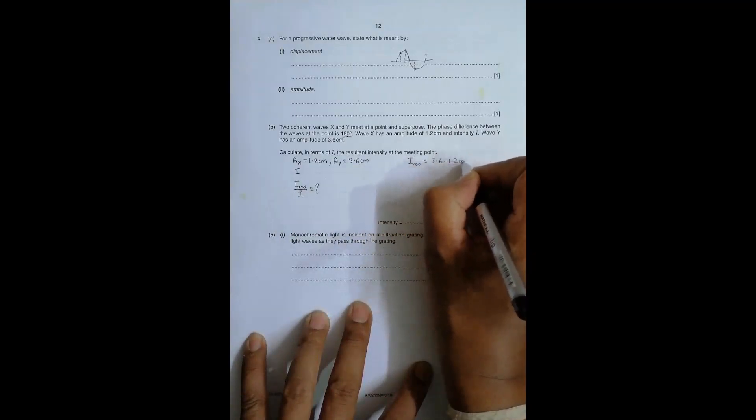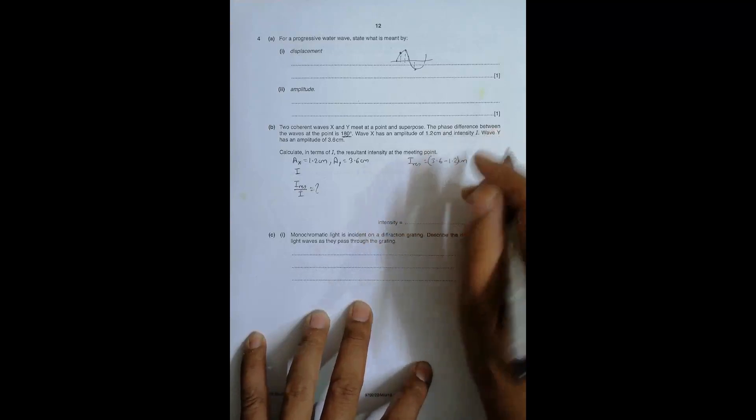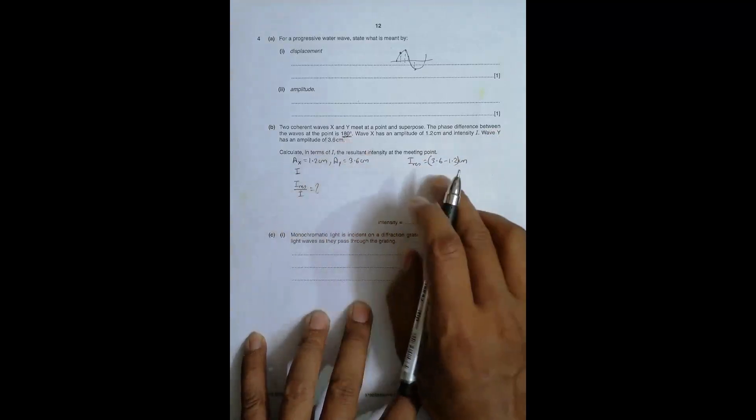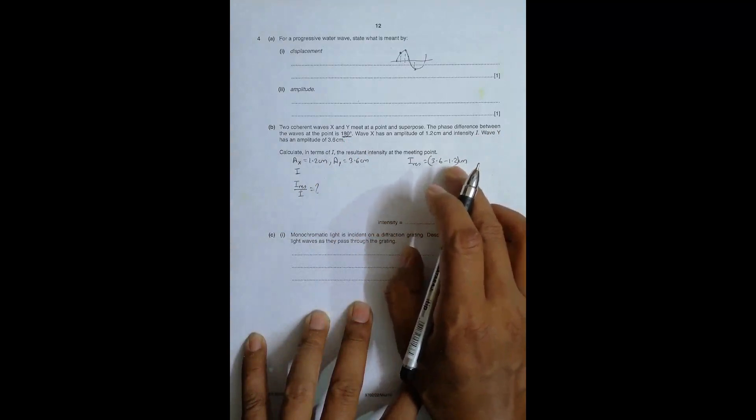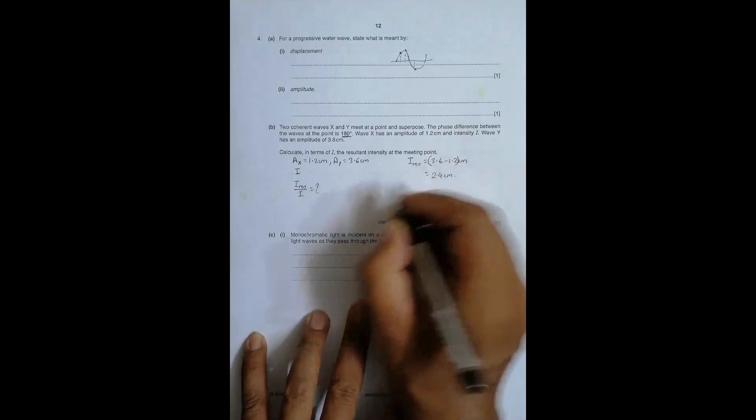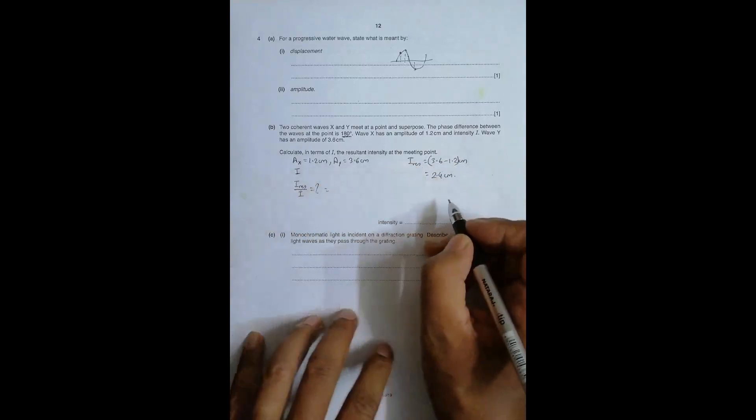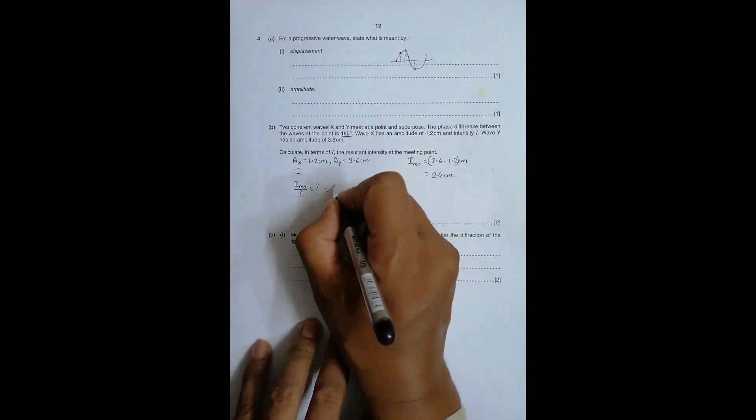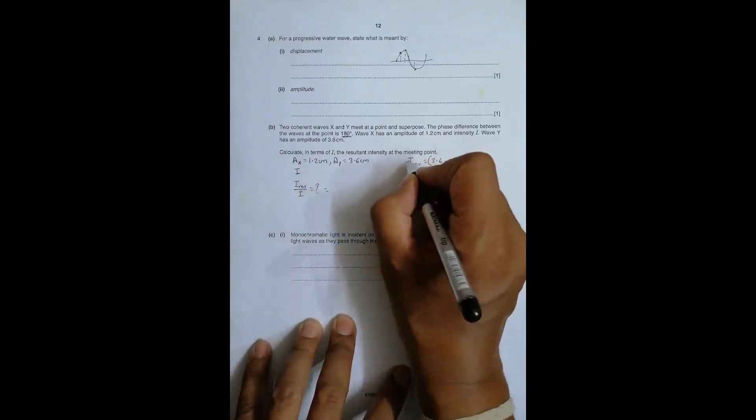The displacement of the particle will be the resultant of these two and this will be opposite of this, so that's why it is minus. So this becomes 2.4 centimeters. This I_resultant should equal K times a_resultant squared.